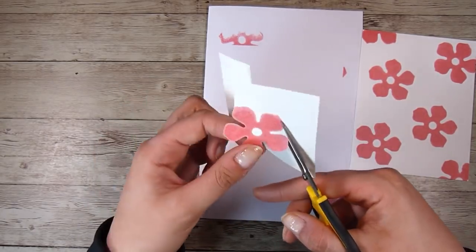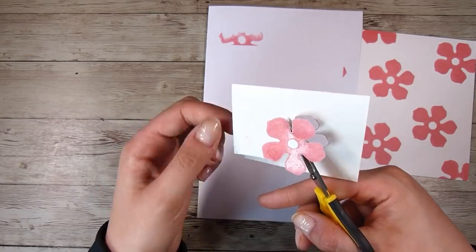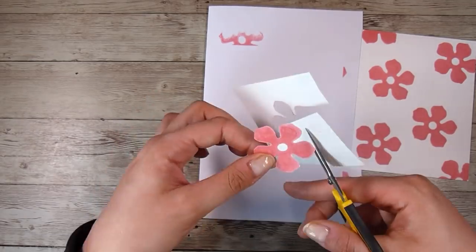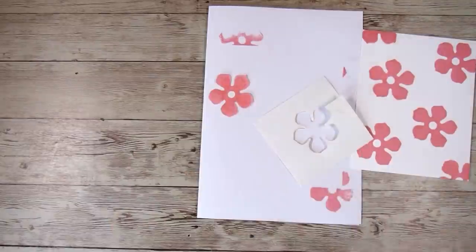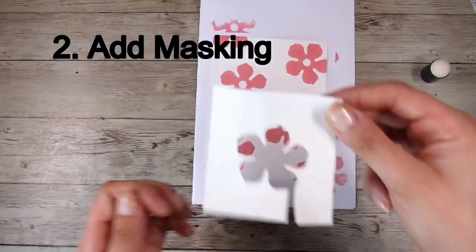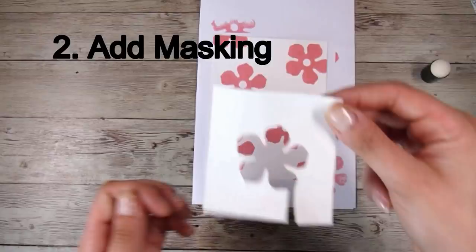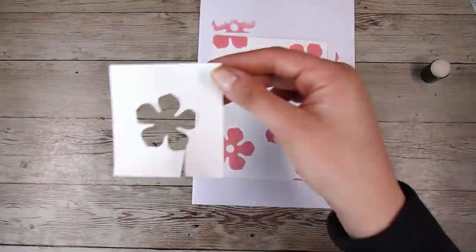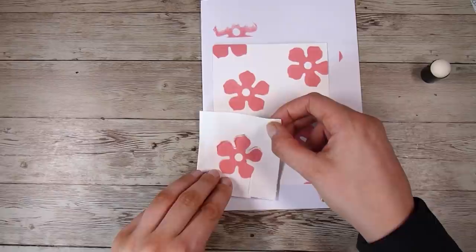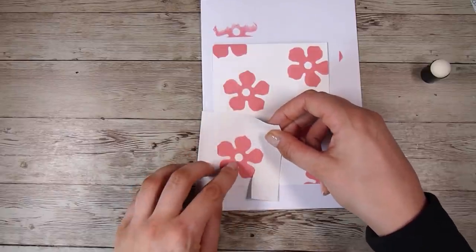So my second tip for card making and stepping it up, taking it to the next level without having all the fancy layered stamp sets and all of those sorts of things is add masking. So just with some masking paper, I have cut out that flower that we stamped. I'm going to add this over top here.